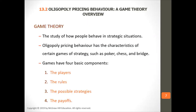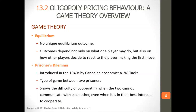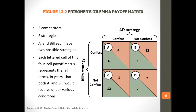Game theory is the study of how people behave in strategic situations. All oligopoly pricing behavior has characteristics of certain types of games such as poker, chess, and bridge. Games have four basic components: players, rules, possible strategies, and payoffs. The prisoner's dilemma shows how it's hard to cooperate when two parties cannot communicate with each other, even when cooperation is in their best interests.